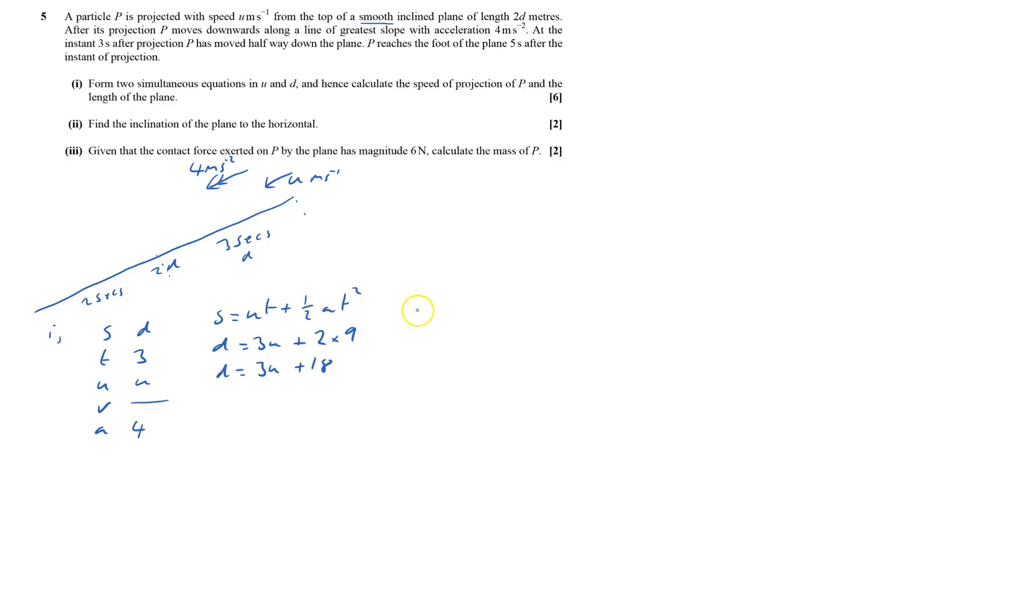The second part of the journey, I've still got constant acceleration, and that constant acceleration is still 4. Total distance now it's gone 2d. Time is taking 5 seconds, 3 and 2. Initial velocity is still u, v I still don't care about. So it's still exactly the same formula.